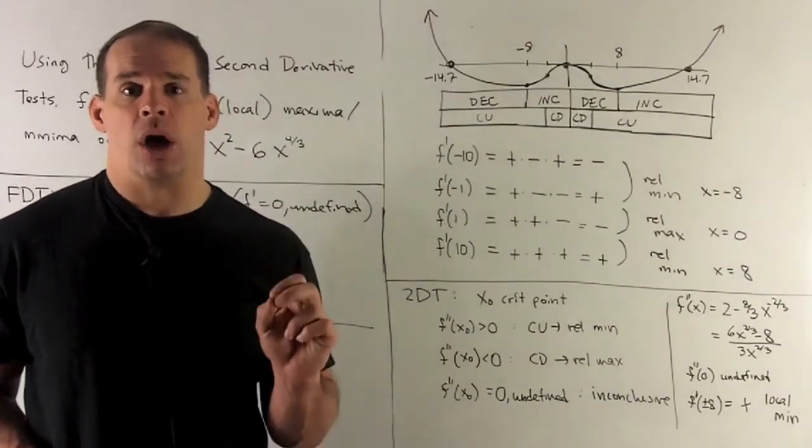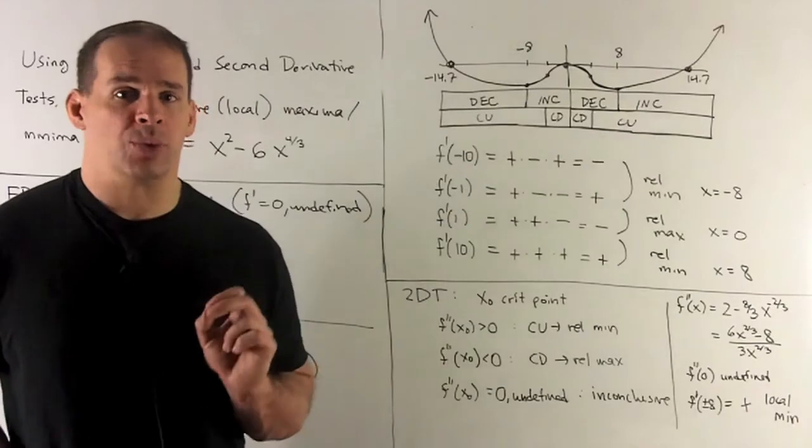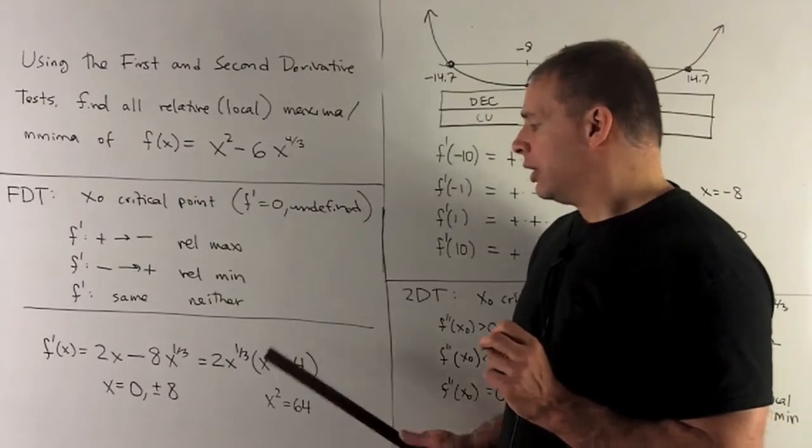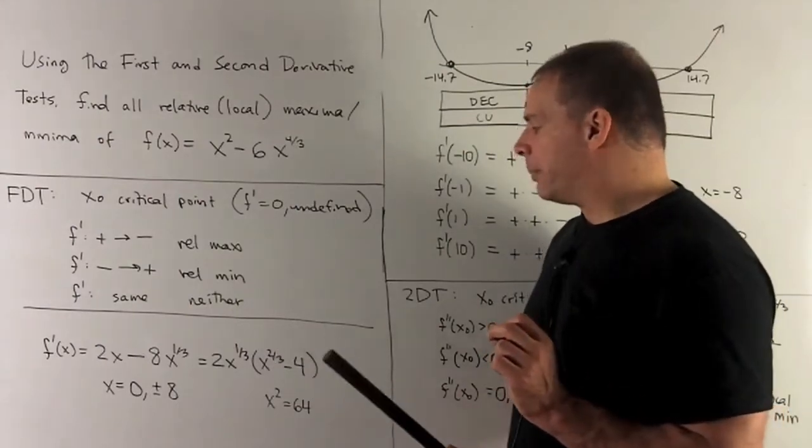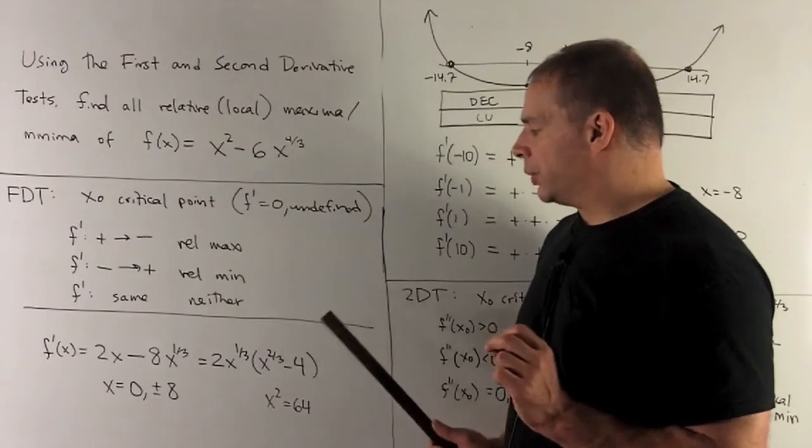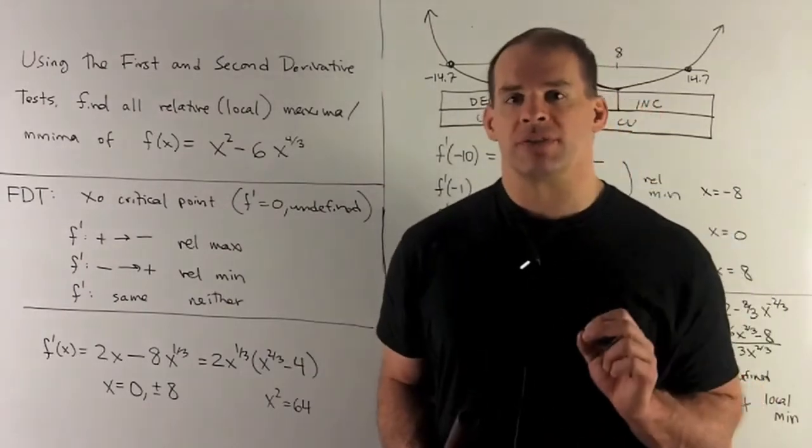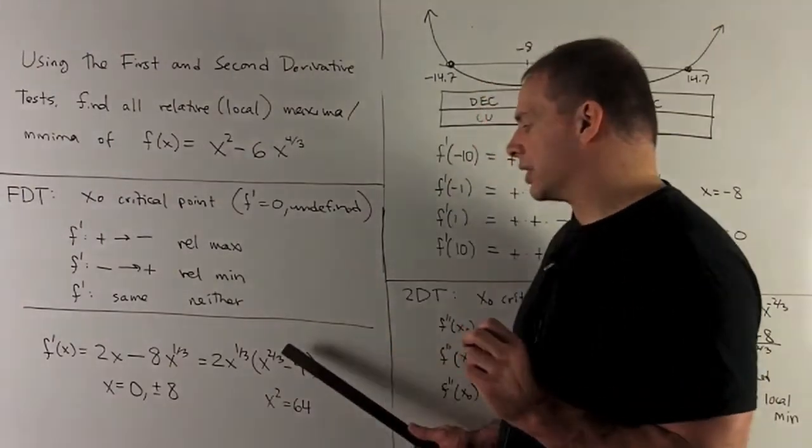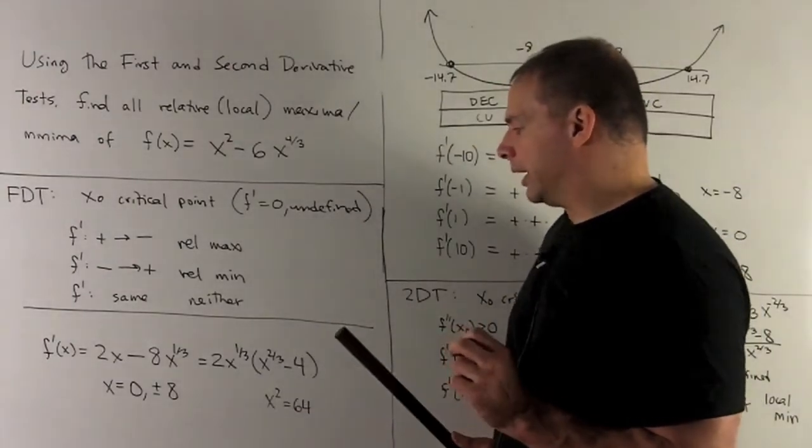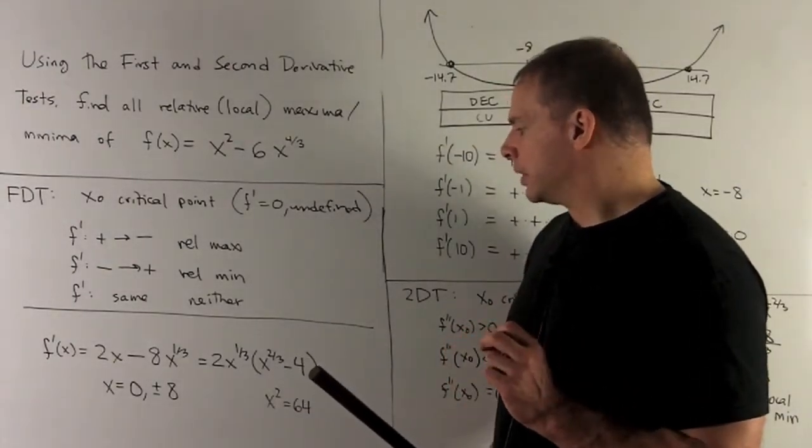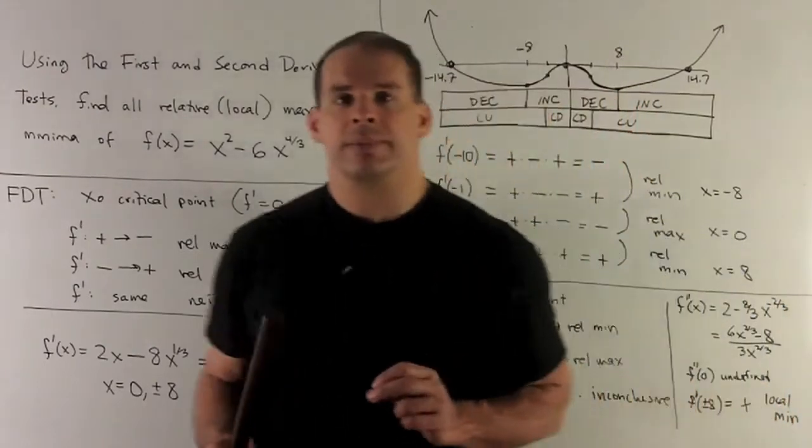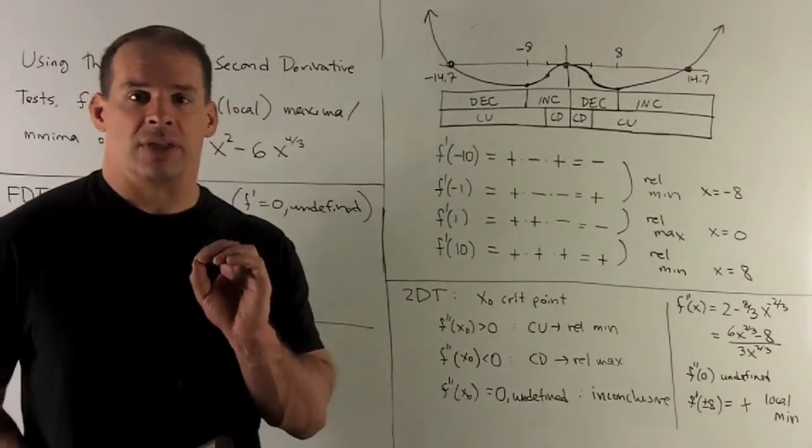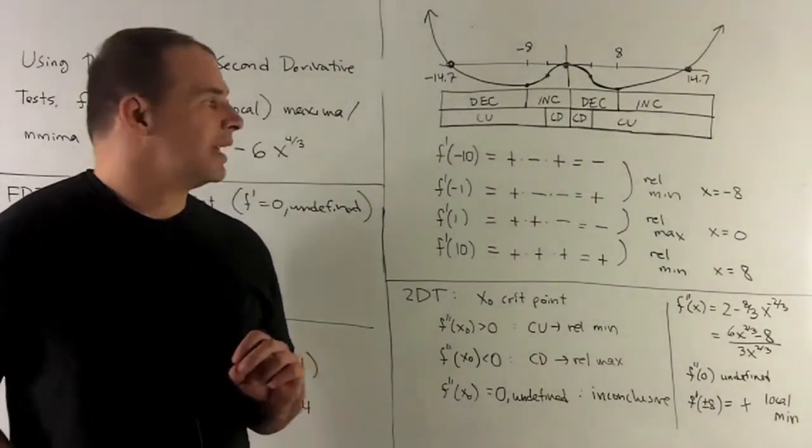What happens when I put minus 10 into the derivative? Put it into the factored form. We have 2. Cube root of a negative number is negative. And then if I put minus 10 into x to the 2 thirds, we square it first, gives me 100. Cube root, I go to my calculator, I get about 4.6. So that's a positive. So the sign on this thing here is going to be a negative number. That means I only care about the sign. I mark it off as a negative. We could say that the region's a region of decreasing.